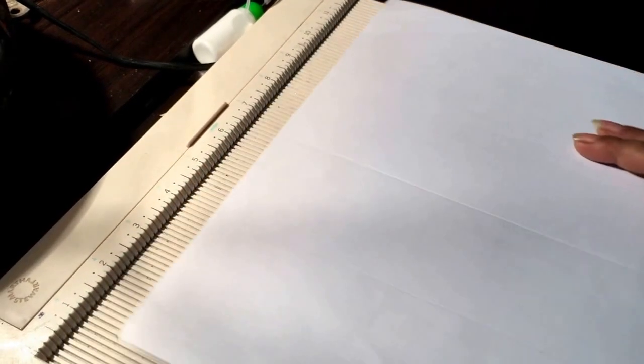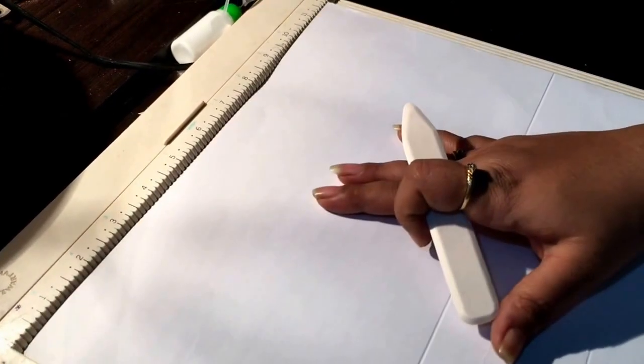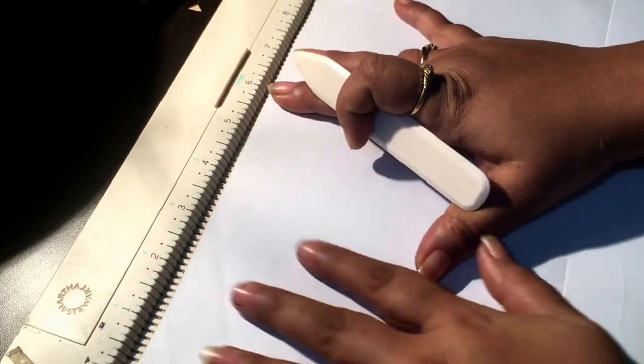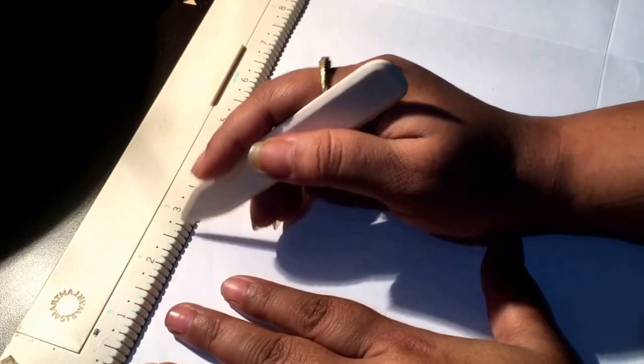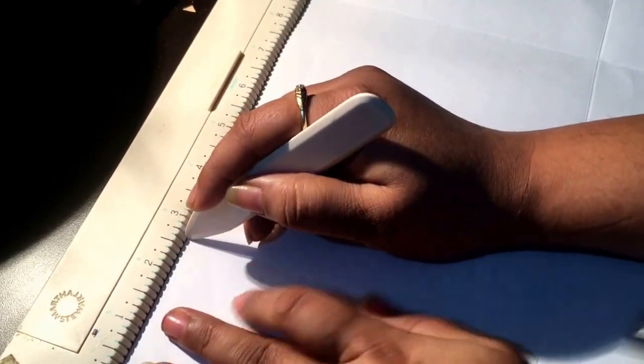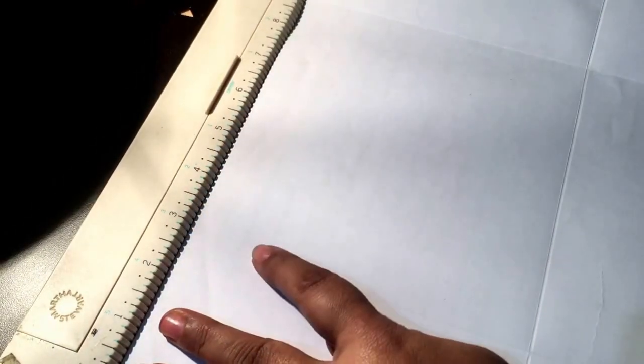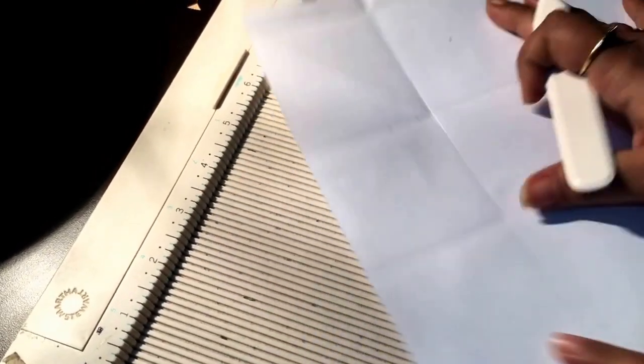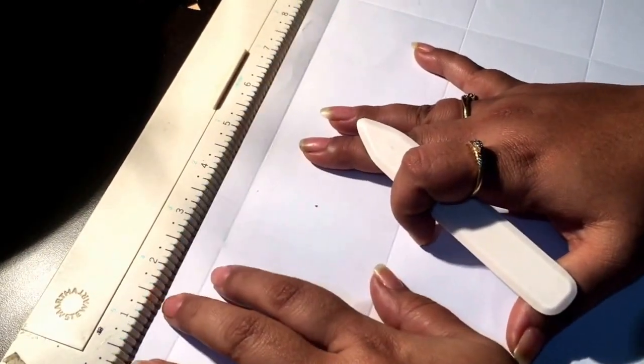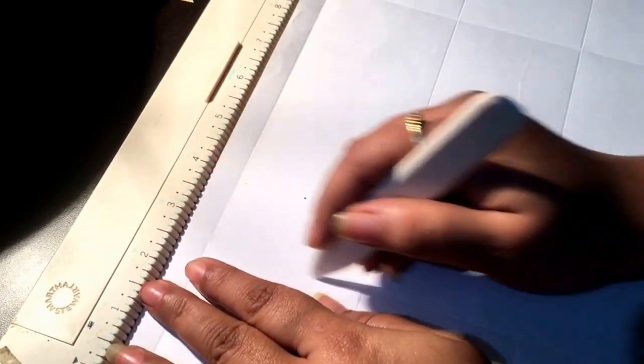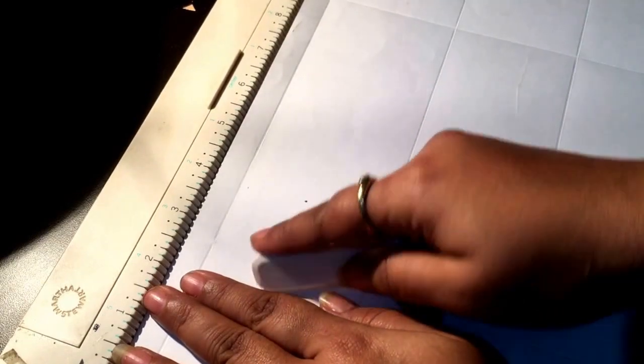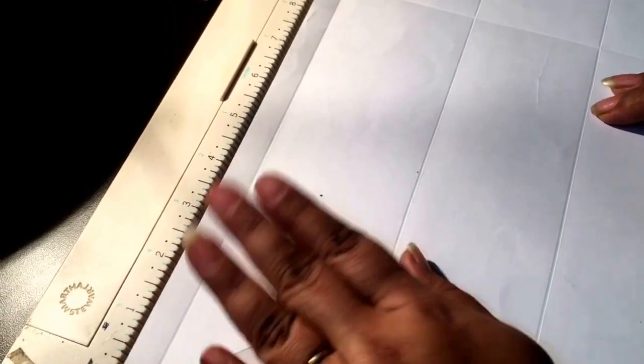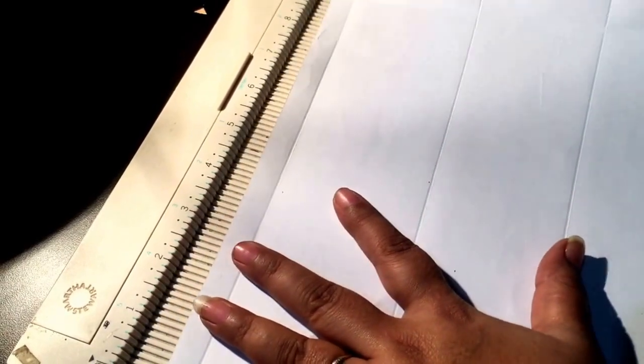We are done with the score lines on this side. Now we do need to do two more score lines. For that, we will just turn the paper over and on the side that has not been scored here, we will make a line at two and three quarters again. Turn it 180 degrees and do two and three quarters so that we have two scores on this side which are at two and three quarters from the edge on both sides.